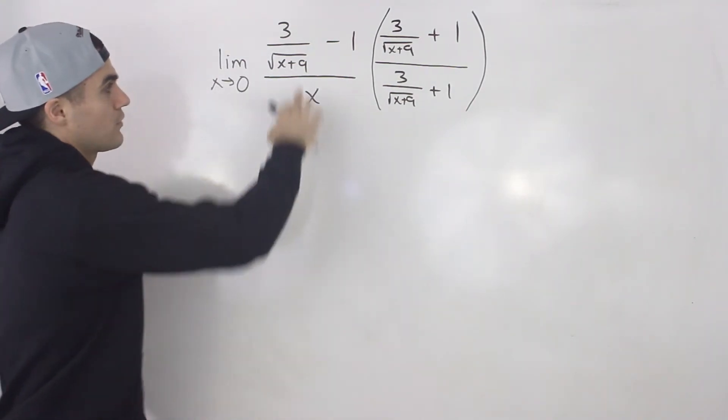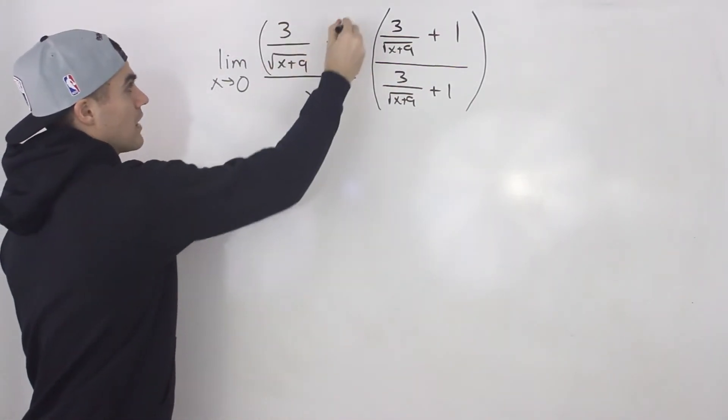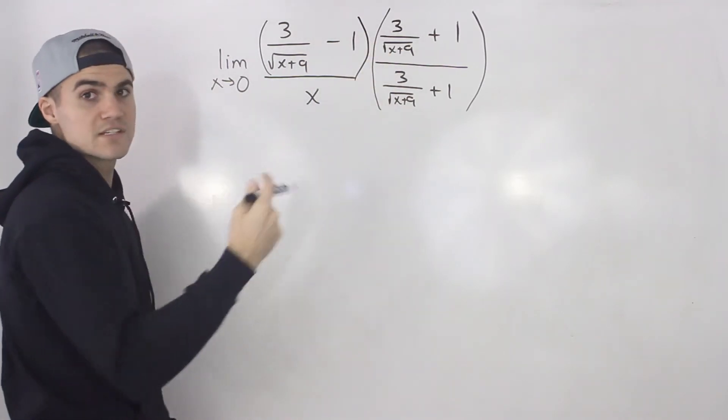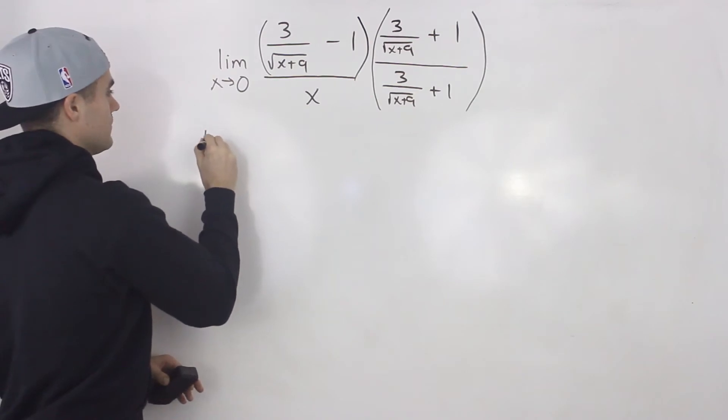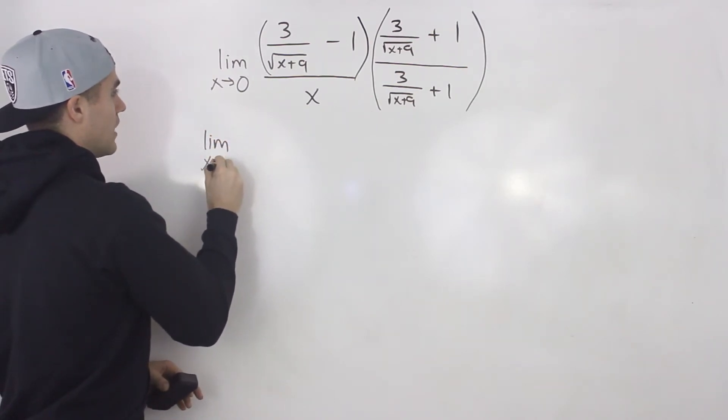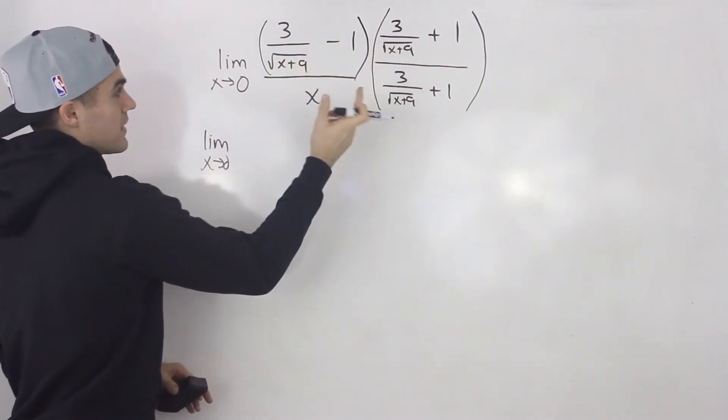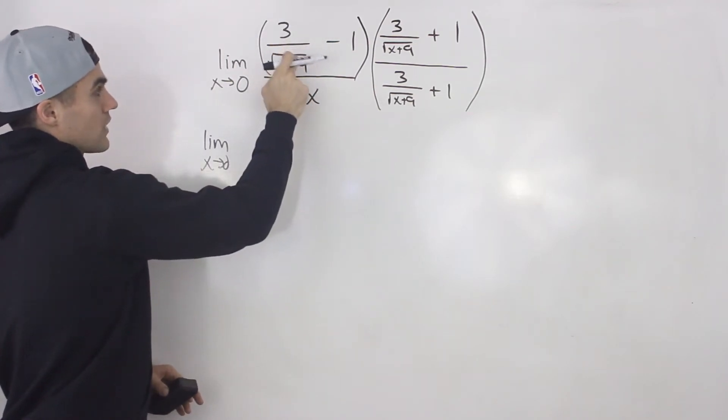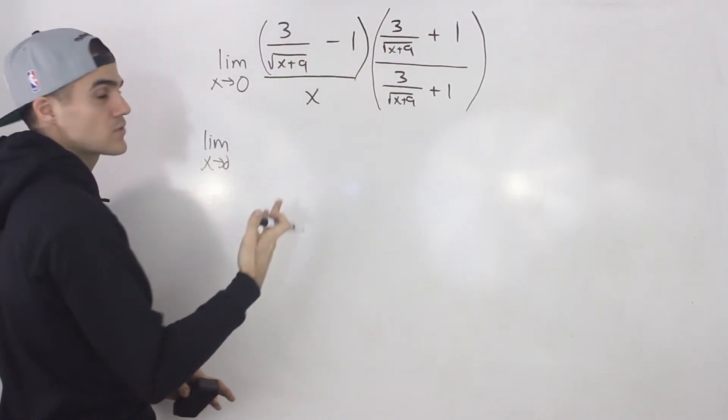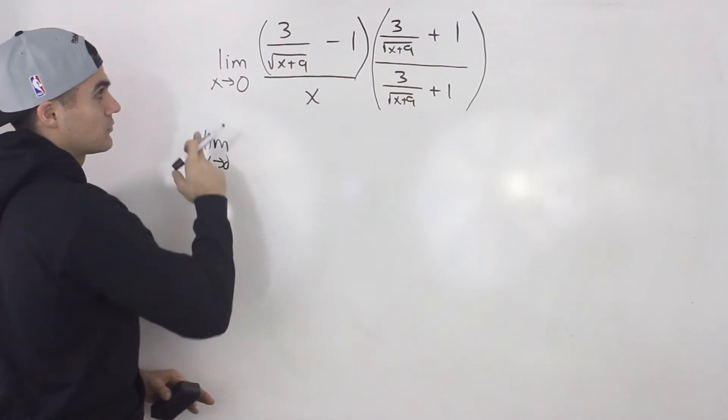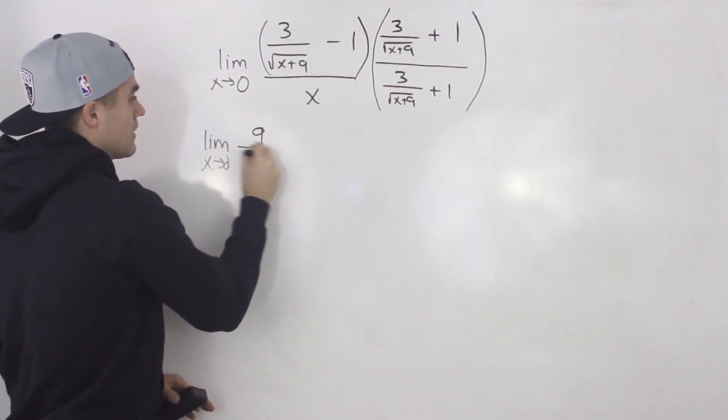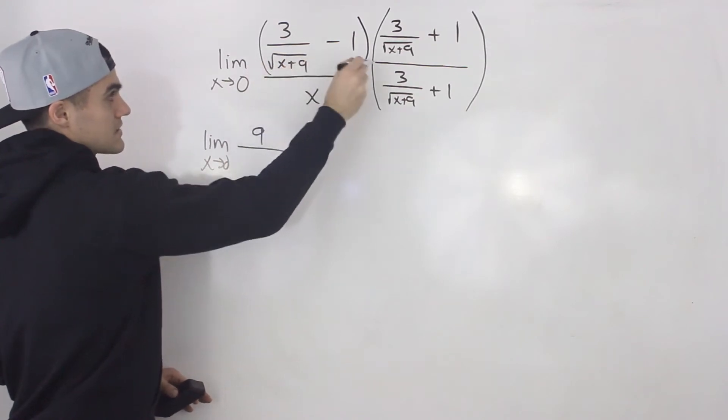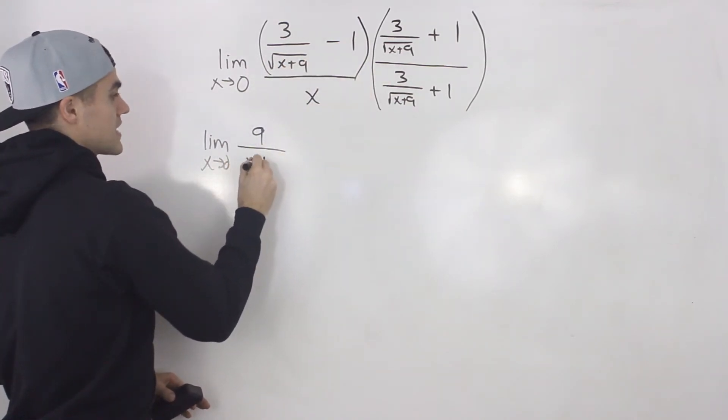So if we take both of these numerators and multiply them by each other, notice that they're going to be a difference of squares. So that middle term is going to cancel out. So all we have to do is multiply those endpoints by each other. So 3 over the square root of x plus 9 times 3 over the square root of x plus 9. We multiply the numerator and the denominator, 3 times 3 is 9. And then the square root of x plus 9 times the square root of x plus 9, that just gives us x plus 9.